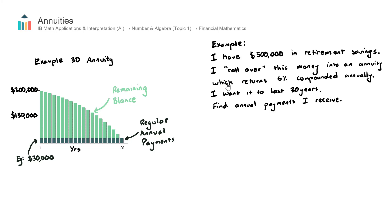Let's now dig into this further with an example, and we're going to solve this using the finance solver, otherwise known as the TVM solver, on the calculator. This example reads: I have $500,000 in retirement savings built up over my working years. I decide to roll this money into an annuity — I don't want the stress of the stock market, I just want fixed amounts. I roll this money into an annuity and the annuity provider returns 6% compounded annually.